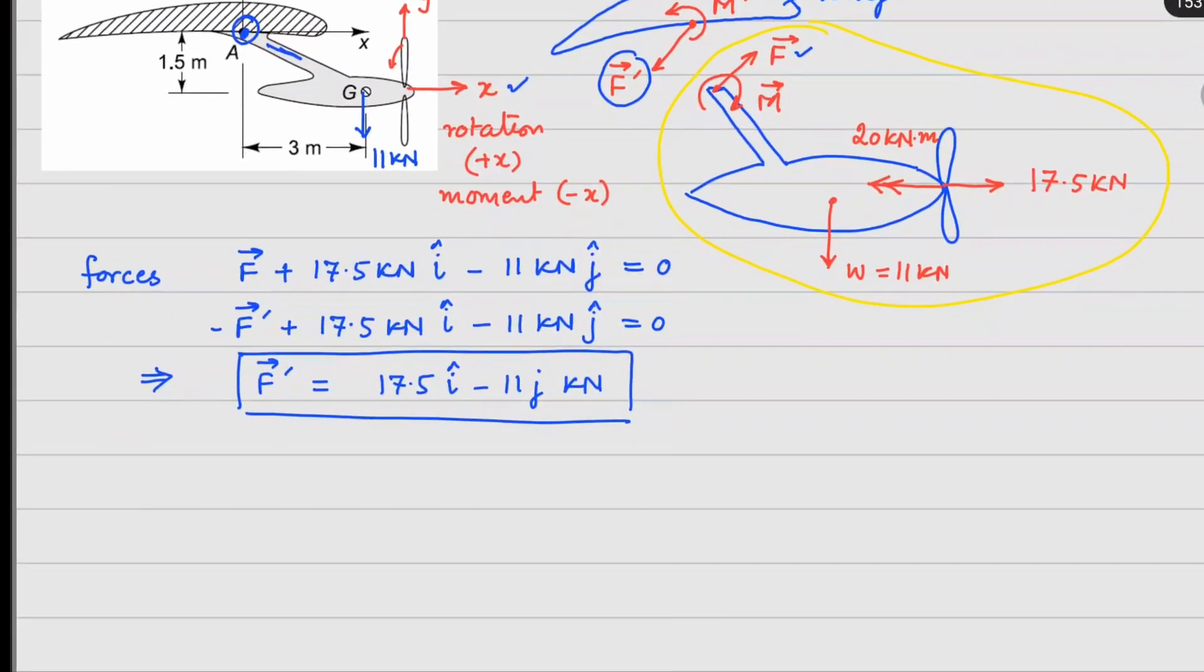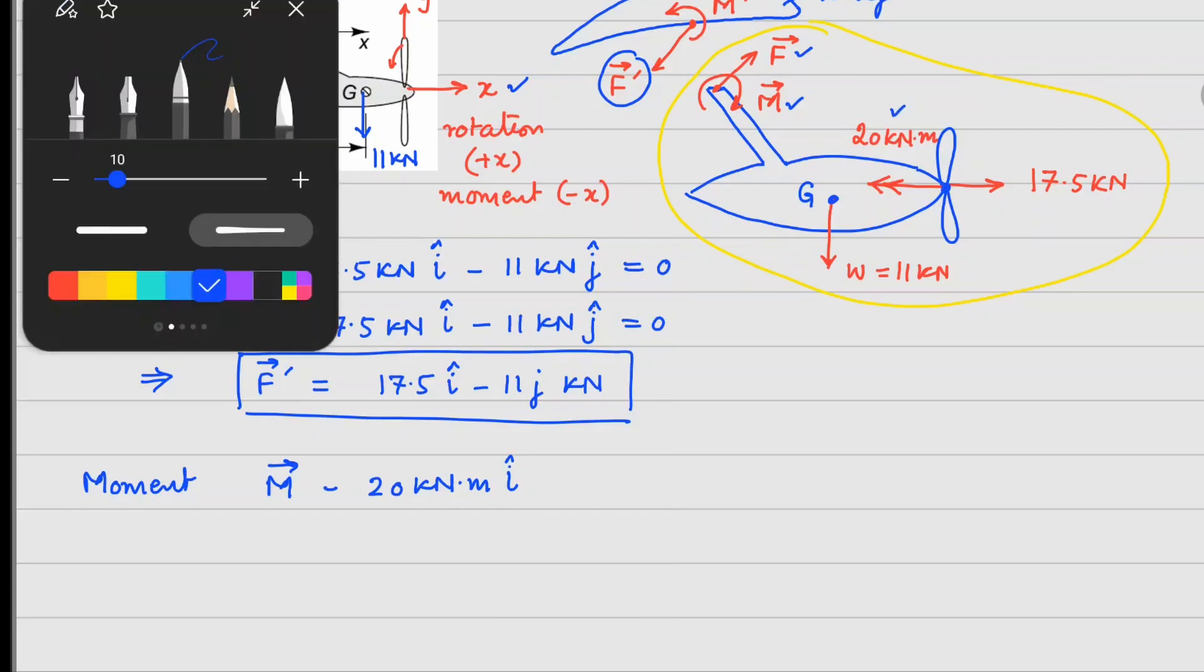Now, the next is the moment calculation. So let us try to do the moment. So first thing first, this M appears there. Second one is this one because it is pointing in the negative direction, so I will write it minus 20 kN meter i cap. Now, we have to see the moments because of your thrust force and your weight. So in terms of dimensions,